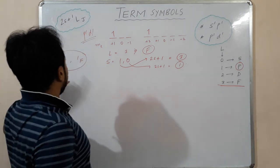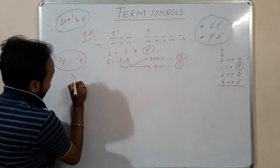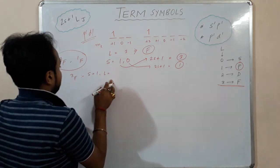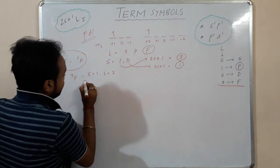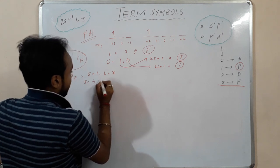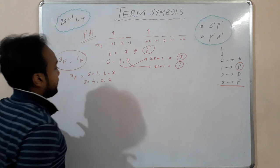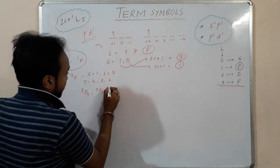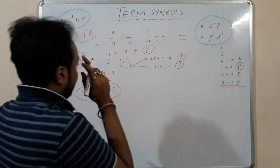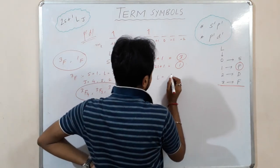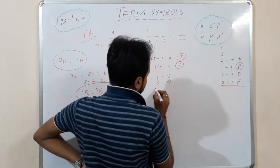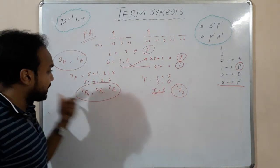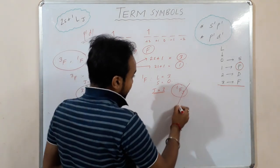For the ³F term, S = 1 and L = 3, so J = L+S to L−S gives J = 4, 3, 2. This gives ³F₄, ³F₃, and ³F₂. For the ¹F term, L = 3 and S = 0, so J = 3, giving ¹F₃. The ¹F₃ term will not be the ground state.